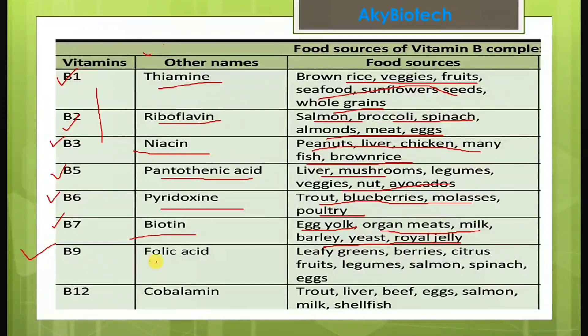Vitamin B9 — folic acid — is found in leafy greens, berries, citrus fruits, legumes, salmon, spinach, and eggs.